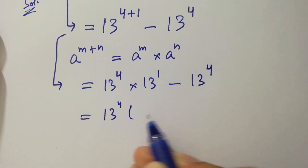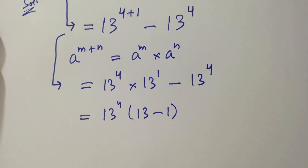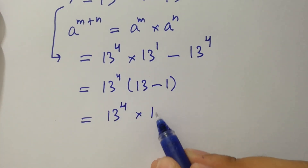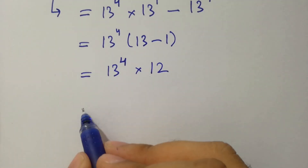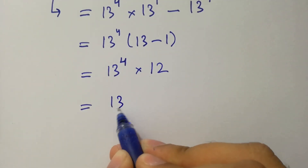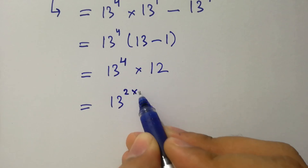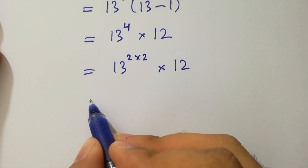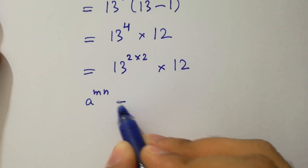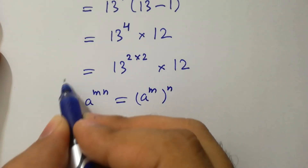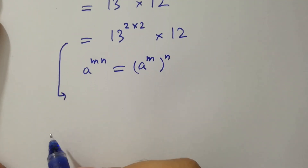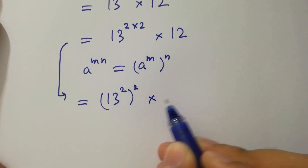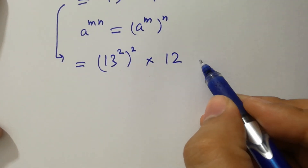13 to the power 4 can be common. We have 13 to the power 4 times (13 minus 1), and 13 minus 1 is 12. This is the same as 13 to the power 2 times 2, times 12, as 2 times 2 is 4. Using the rule a to the power mn equals a to the power m, to the whole power n, then we have 13 to the power 2, to the whole power 2, times 12. So let's call this the first equation.